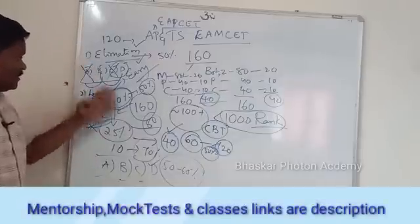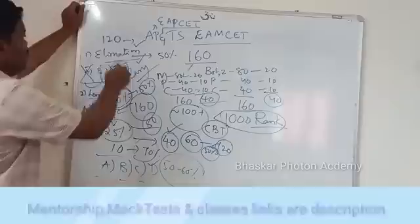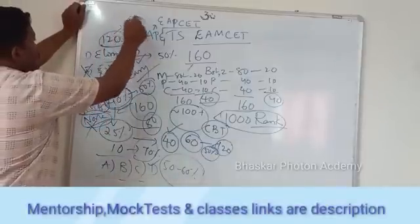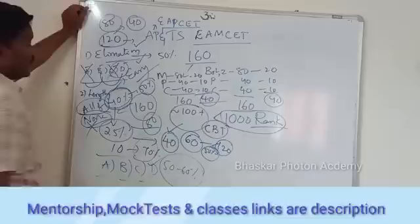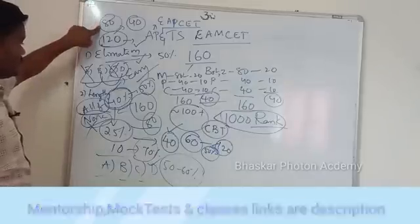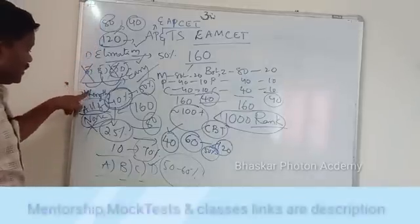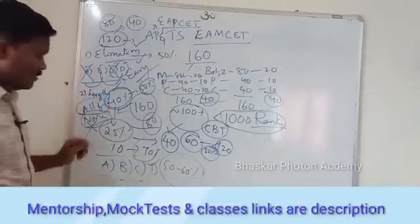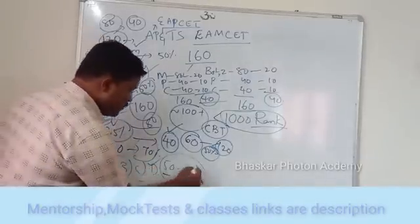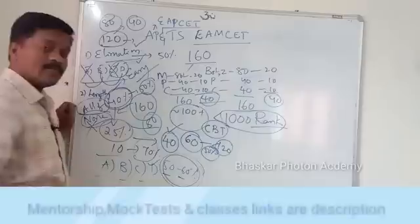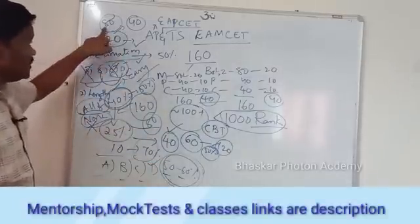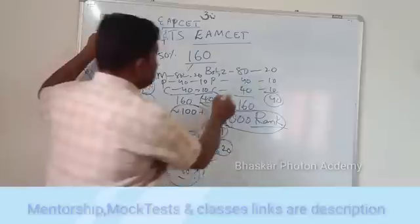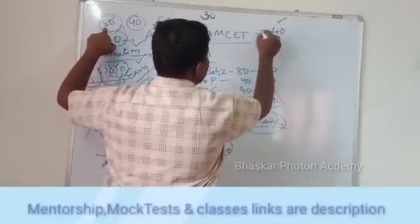In this case, you will get easy marks. For example, out of 120, say 80 questions — using elimination method, all of the above, none of the above — 15 to 60% marks easy. And 80 questions at 50% gives 40 marks.